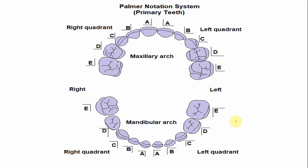In the Palmer notation system, the alphabet for both the right and the left mandibular first molar is the same — the alphabet D is used for both. The only difference is the symbol: this symbol indicates whether the tooth is of the mandibular arch on the left side or the right side.